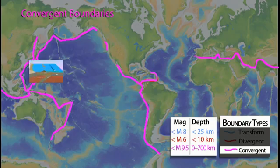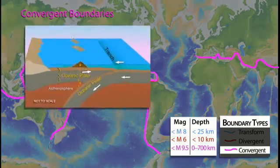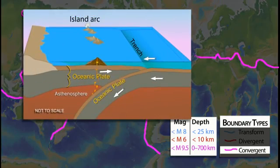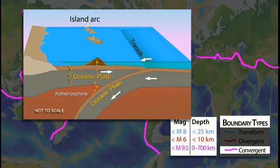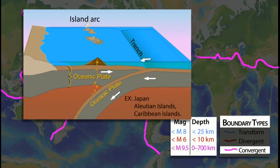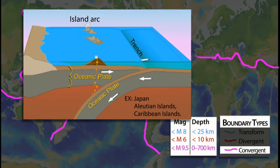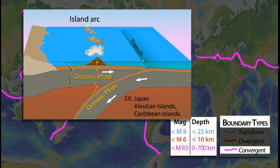Similar processes occur when an oceanic plate subducts beneath another oceanic plate. Here, an ocean trench marks the location where the plate is pushed down into the mantle. In this case, the line of volcanoes that grows on the upper oceanic plate is an island arc.